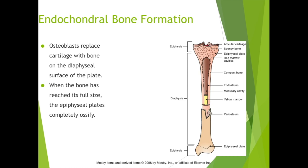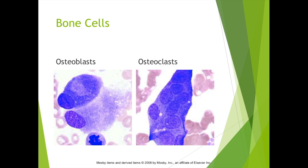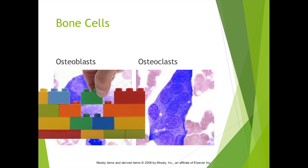Bone cells: we have osteoblasts, which are the cells that create bone — they lay down the matrix that is the pathway for bone formation. And then we have osteoclasts, which are involved in remodeling bones. They actually eat away at the bone to remodel it. So osteoblasts build bone, and osteoclasts destroy bone, most often to remodel it.